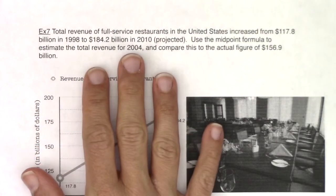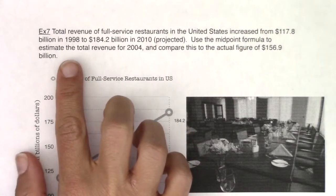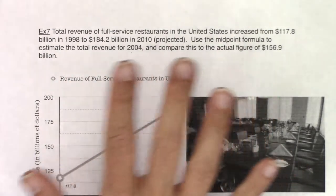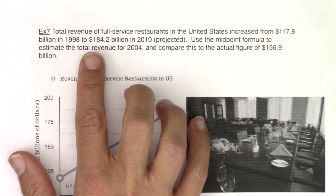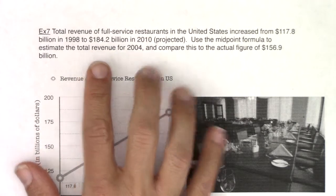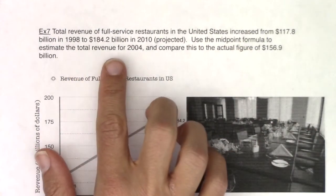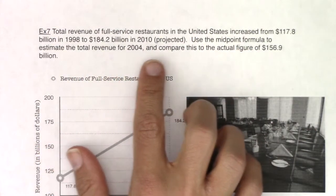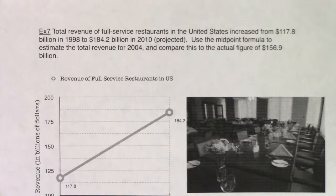Total revenue of full-service restaurants in the United States increased from $117.8 billion in 1998 to a projected $184.2 billion in 2010. Use the midpoint formula to estimate the total revenue for 2004 and compare this to the actual figure of $156.9 million.